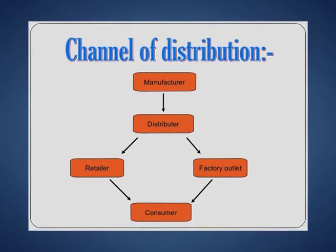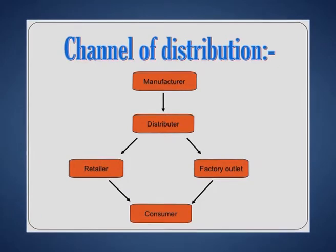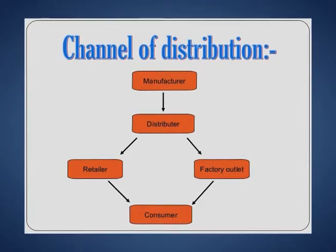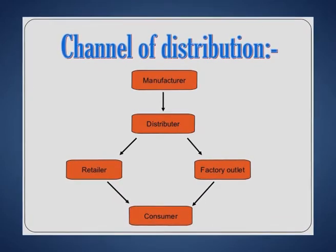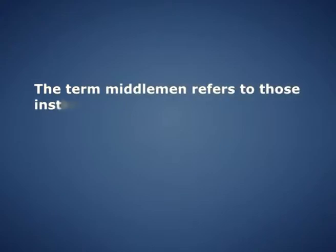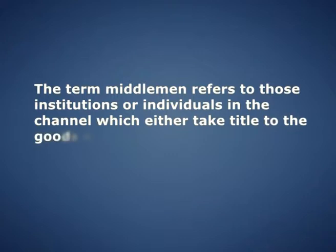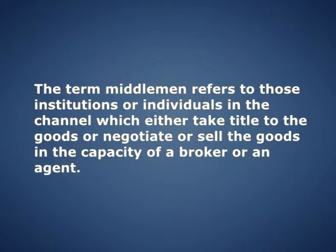Every country or target market presents the exporter with unique middlemen and distribution patterns. In essence, a channel of distribution includes the original producer at one end, the final buyer at the other end, and the middlemen between the two — that is wholesalers, retailers, etc. The term middlemen refers to those institutions or individuals in the channel which either take title to the goods or negotiate or sell the goods in the capacity of a broker or an agent.